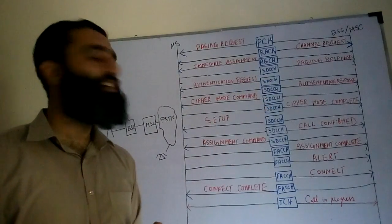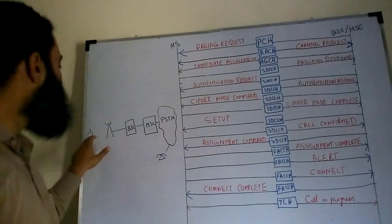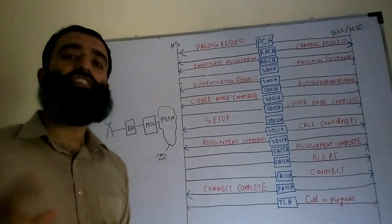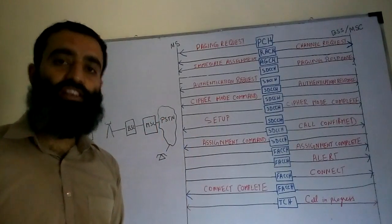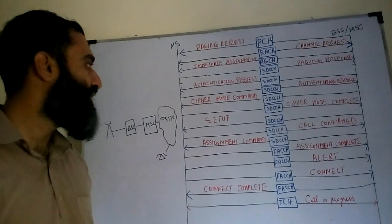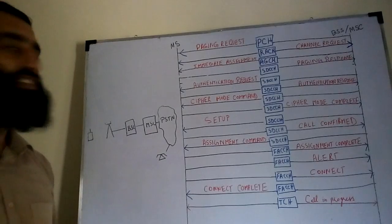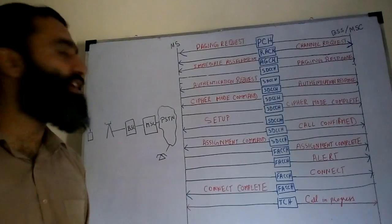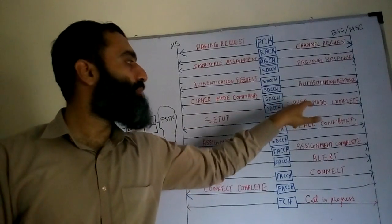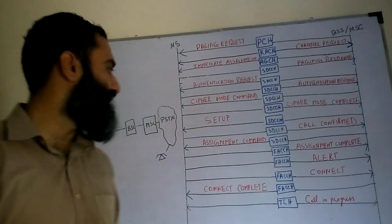Once this mobile station has been authenticated, the network will ask this mobile on the SDCCH channel to cipher its communication with the base station. Similarly, the MSC will also instruct the base station to start ciphering its communication with the mobile station. Once the ciphering procedure has been completed, the mobile station will respond with a cipher mode complete message, indicating that it has started ciphering its communication with the BTS.